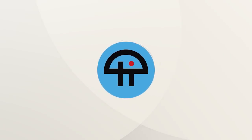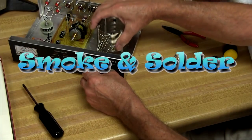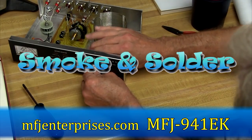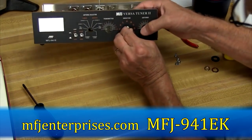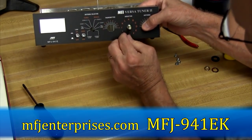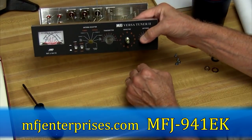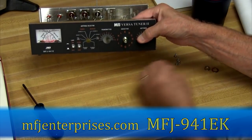This is Tweet. For the last couple of weeks on Smoke and Solder, we've been building the MFJ-941EK HF Antenna Tuner Kit. This week, we're going to do the final testing and calibration.